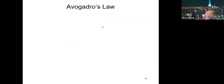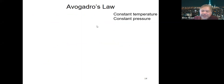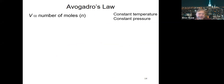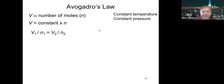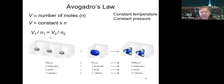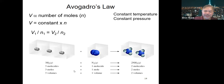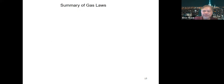Next is Avogadro's Law, which looks at the amount of substance with respect to volume at constant temperature and pressure. The volume is directly related to the number of moles: V1/n1 = V2/n2. The volume of a gas increases with an increase in the number of moles of substance.